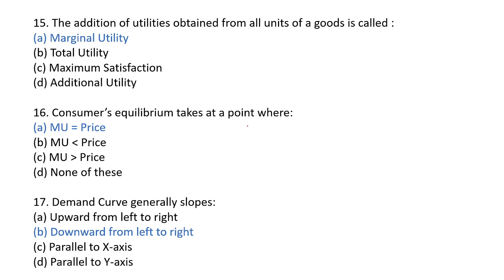Next question: consumer equilibrium is reached at the point where? The consumer equilibrium is where marginal utility equals the price. In the case of a one-commodity model, a consumer is said to be in equilibrium when they purchase that much of the commodity where the marginal utility of the commodity equals its price. So the answer will be A.